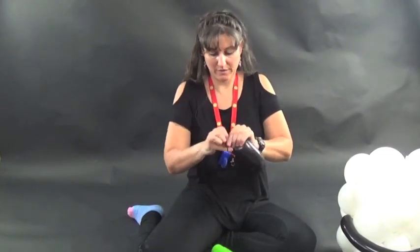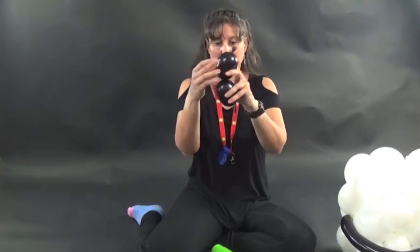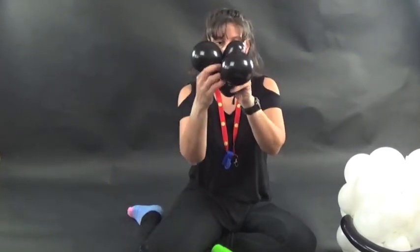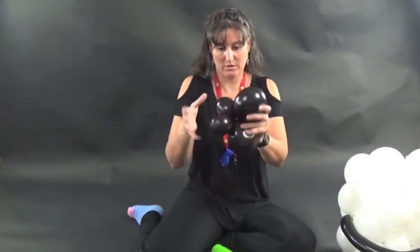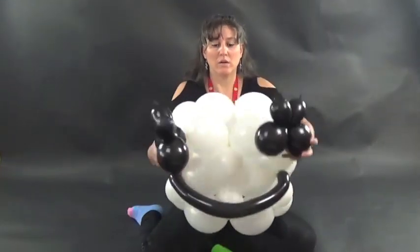Tie that off. Put the twist back in. So you have two four finger bubbles. Now you're going to take and twist that onto the two five inch rounds. So now you have your second eye.